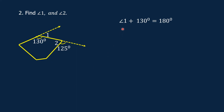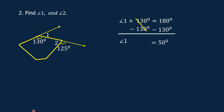To solve for angle 1, we must get rid of 130 degrees from the left side by subtracting 130 degrees from both sides to keep the equation balanced. Bring down angle 1. 130 degrees minus 130 degrees equals 0, so we can cancel this. 180 degrees minus 130 degrees is equal to 50 degrees. Therefore, angle 1 is equal to 50 degrees. We can check by addition: 50 degrees plus 130 degrees is equal to 180 degrees.